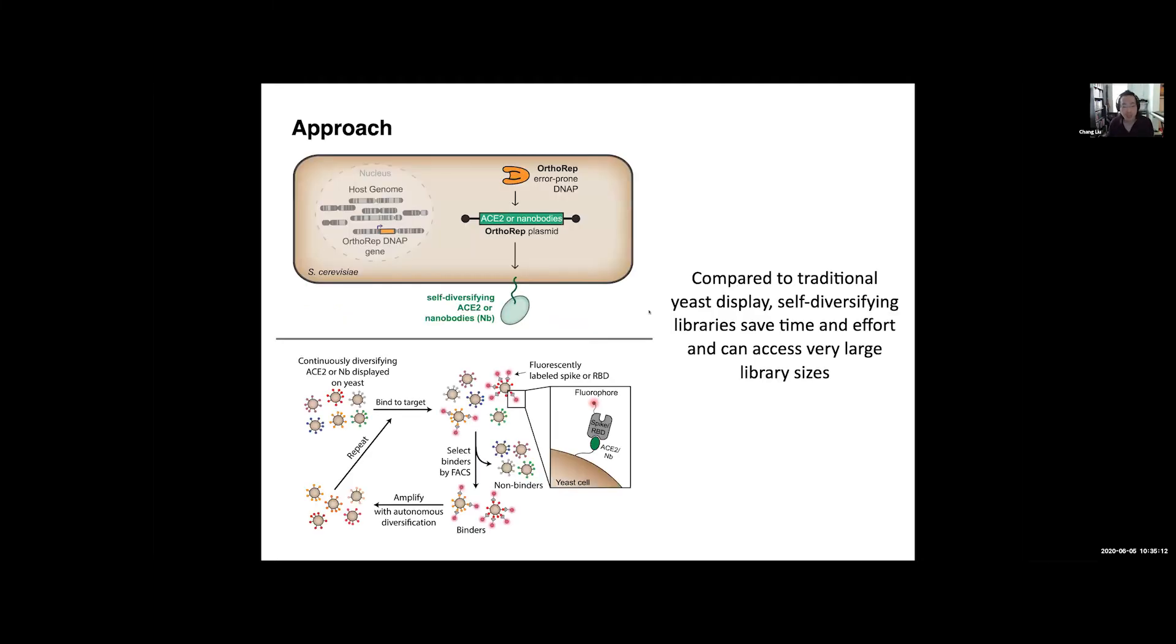So this is the summary of the project. The basis of this project is this evolution system that we have developed in my lab called orthogonal replication, or OrthoREP, where we can now encode in yeast cells, and hopefully many other cell types in the future, genes onto a special plasmid that is only replicated by this DNA polymerase with very high error rates. And then this will allow what's encoded here to continuously diversify.